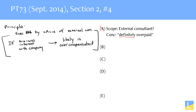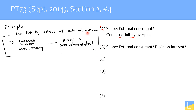Answer choice B starts off okay because the conclusion is that the executive is probably overpaid, which matches 'likely' because likely means probably. But the rest of answer choice B goes completely wrong. Where's the external consultant? Where's the business interest? Answer choice B is not talking about the situation that this principle is about. If you are at all tempted by answer choice B, that's probably because you're bringing in outside understandings — like if a CEO is paid 40 times more than the average employee, that's somehow overpaid. But that isn't anywhere in this principle.